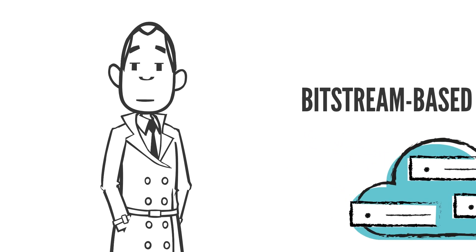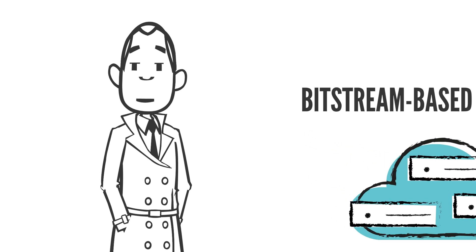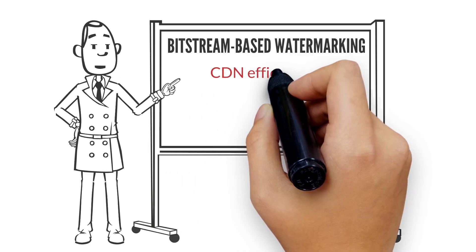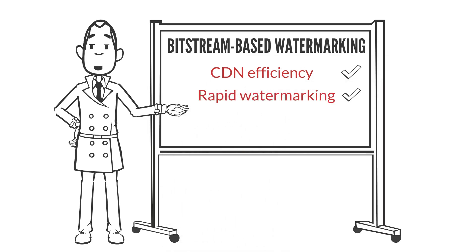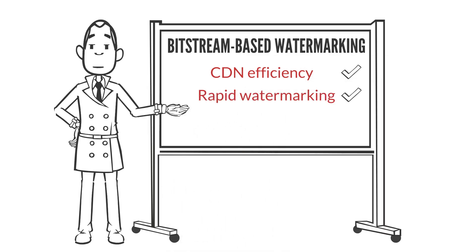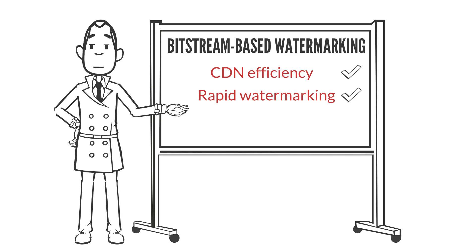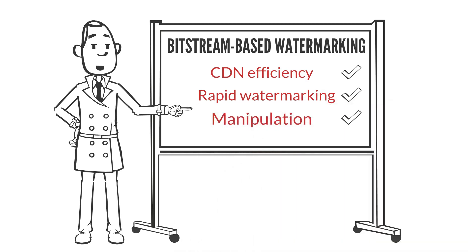Bit stream-based watermarking has several advantages over a manifest-based approach. The CDN only has to send and store a single copy — the original TV show. It can embed a watermark at a rate of several bits per second, rather than fractions of a bit per second. And it's far more difficult to mask the watermark.